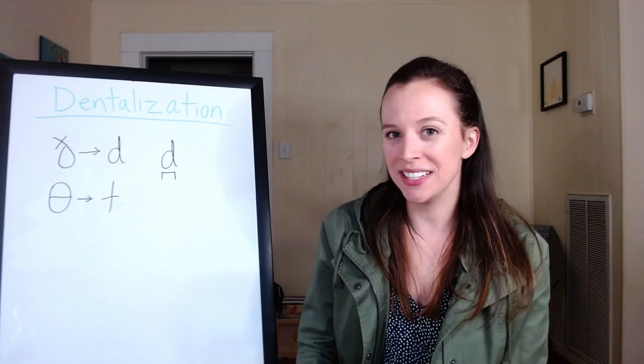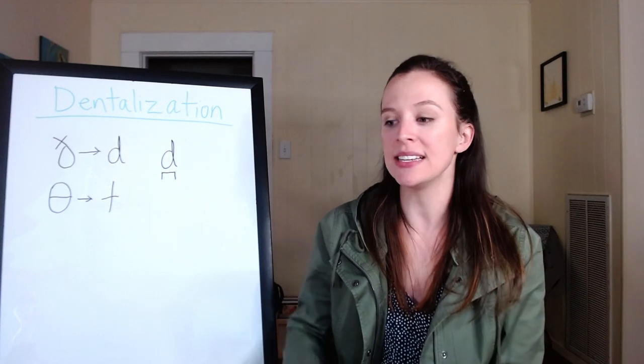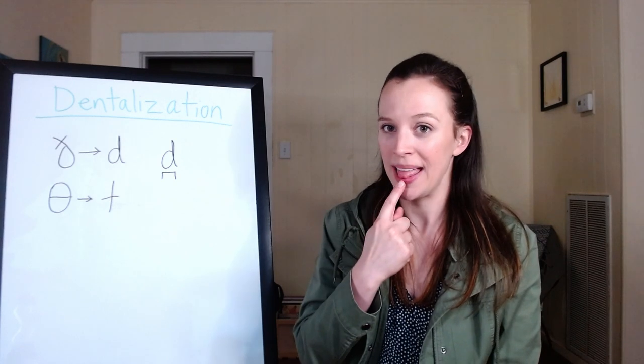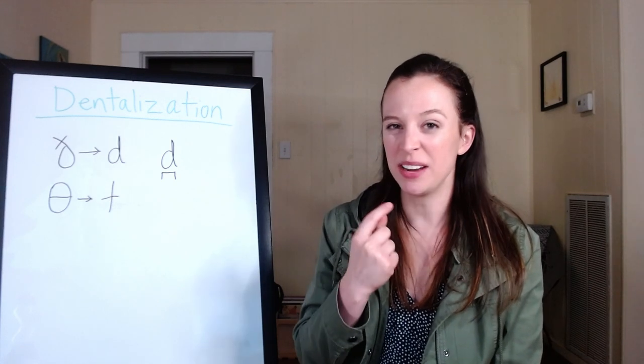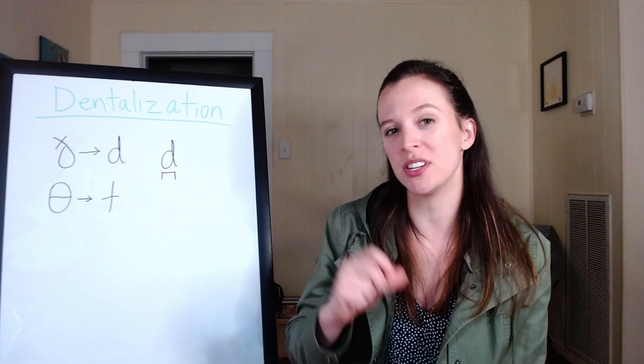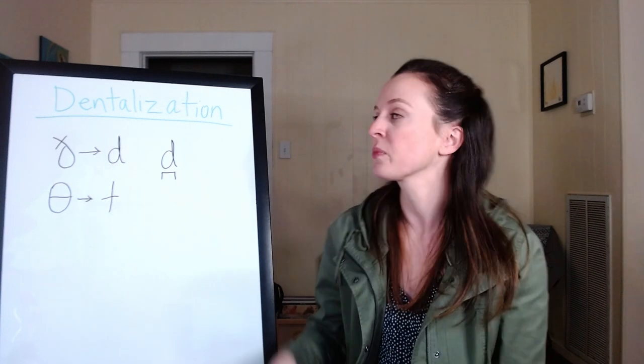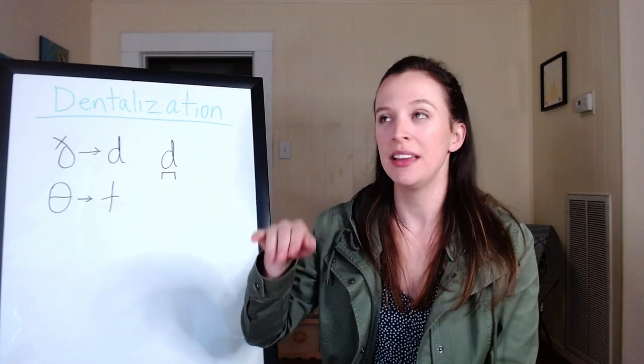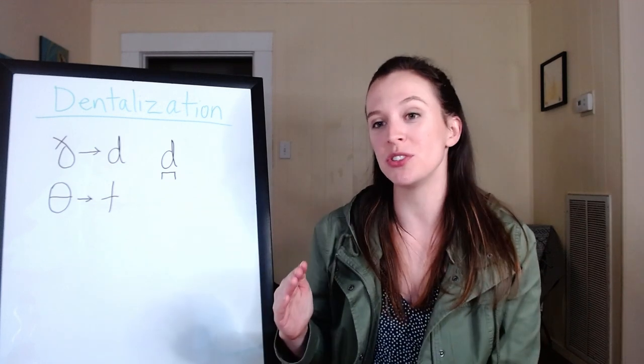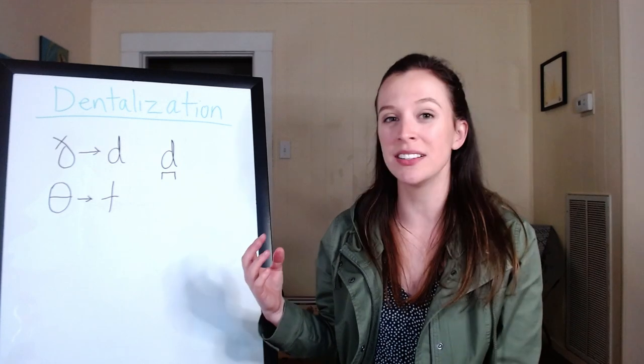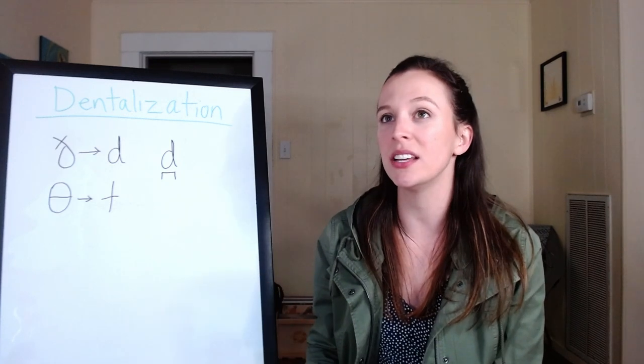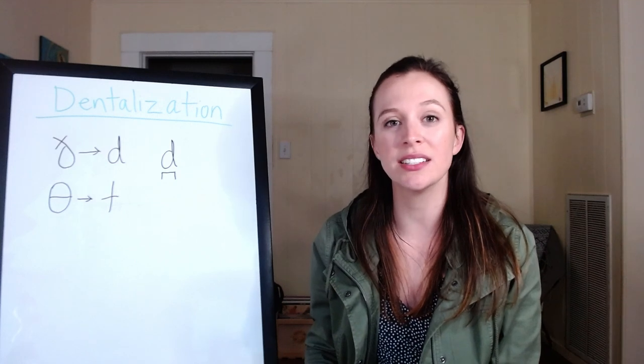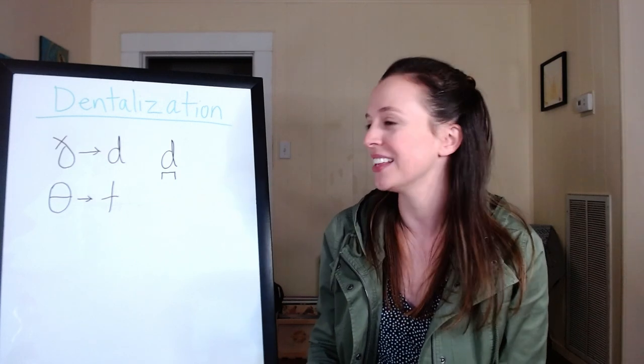So if you're dentalizing it, what happens is instead of just the tip of your tongue, the blade of your tongue gets involved. So tip, and then right kind of behind the tip, a little bit more of your tongue is called the blade of your tongue. And instead of hitting your alveolar ridge or underneath your teeth, the blade of your tongue touches the back of your front tooth and you get kind of a dull D sound. A dull D, right?